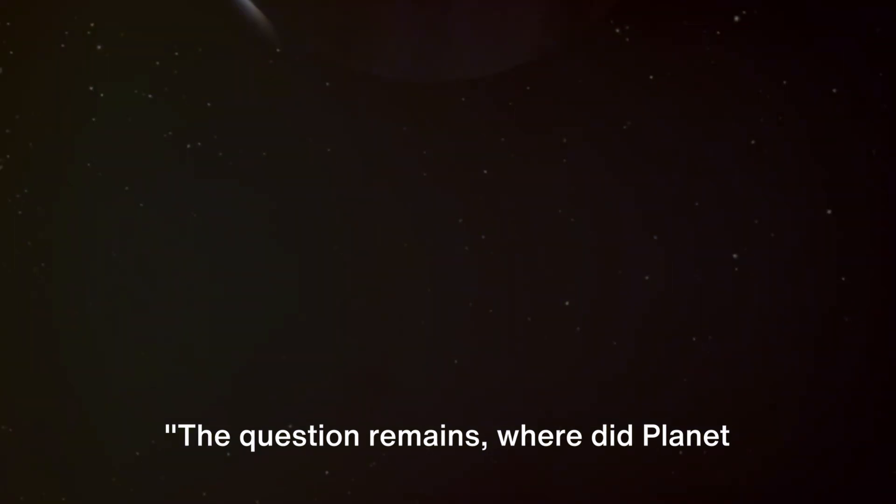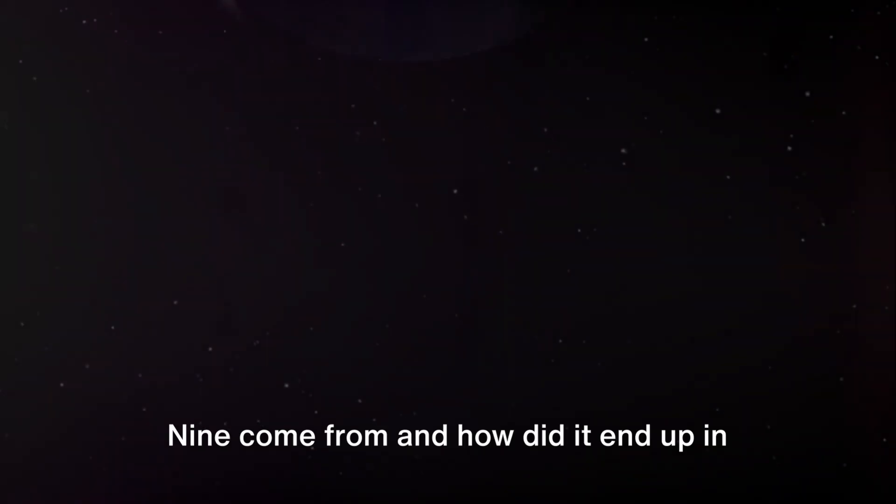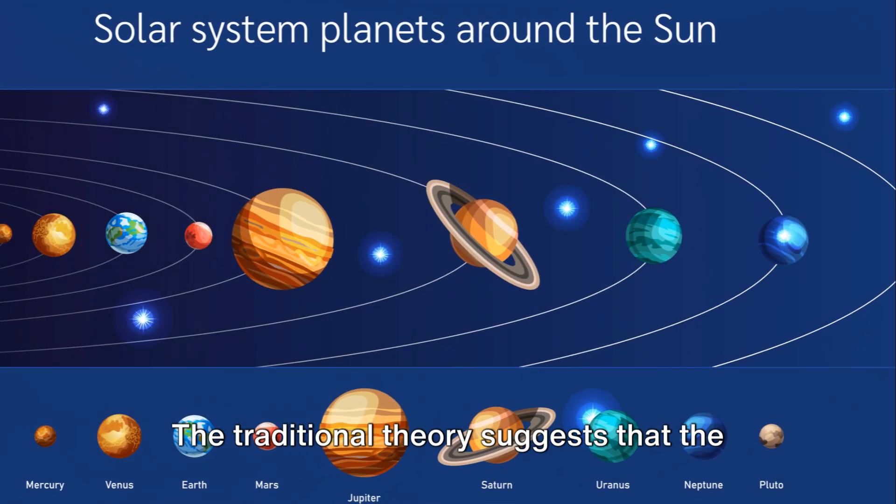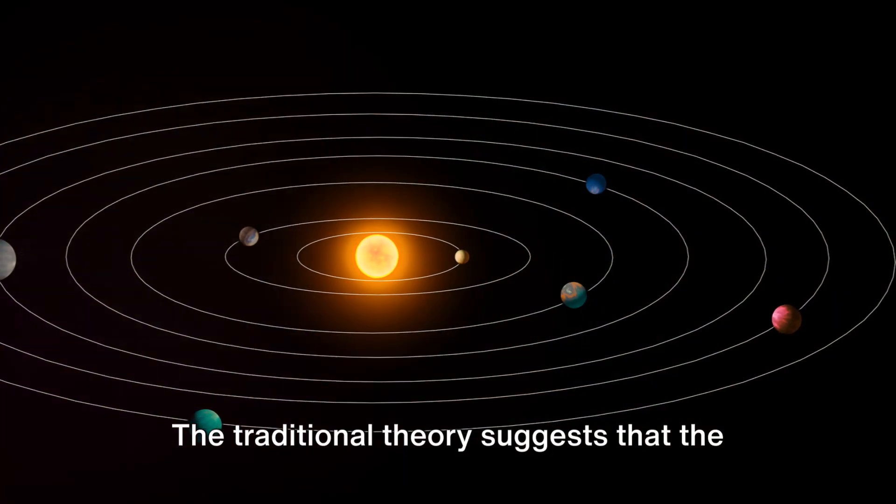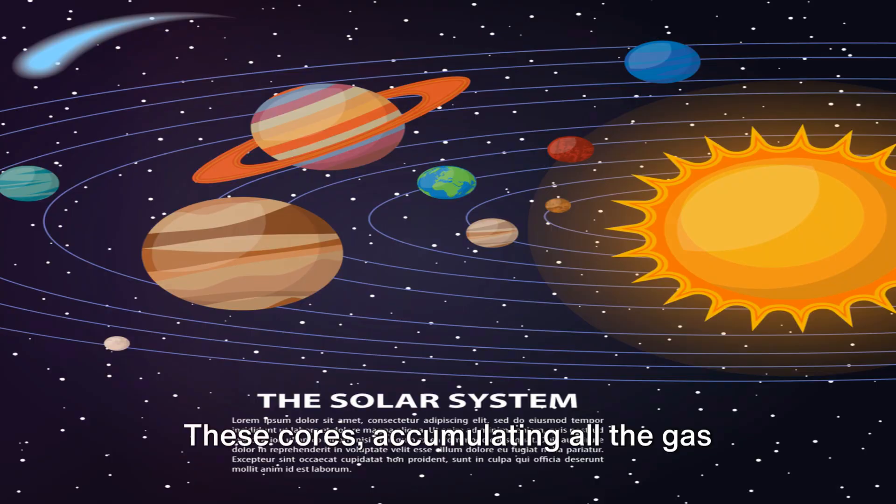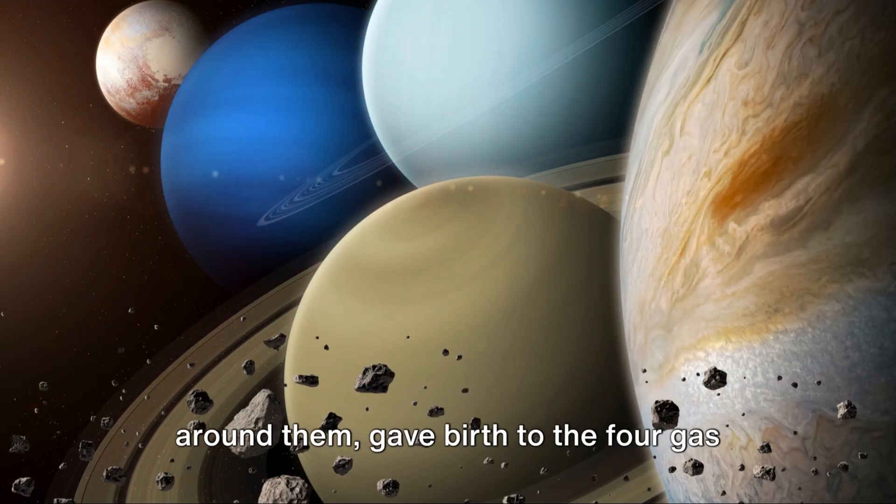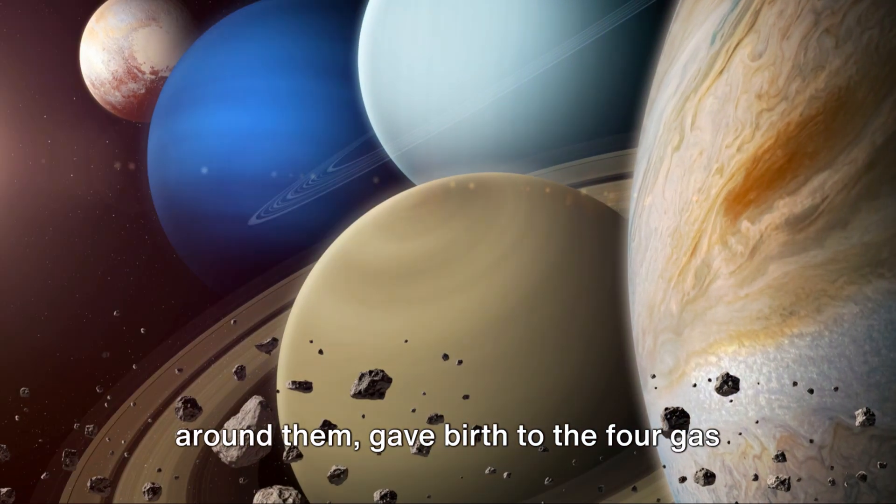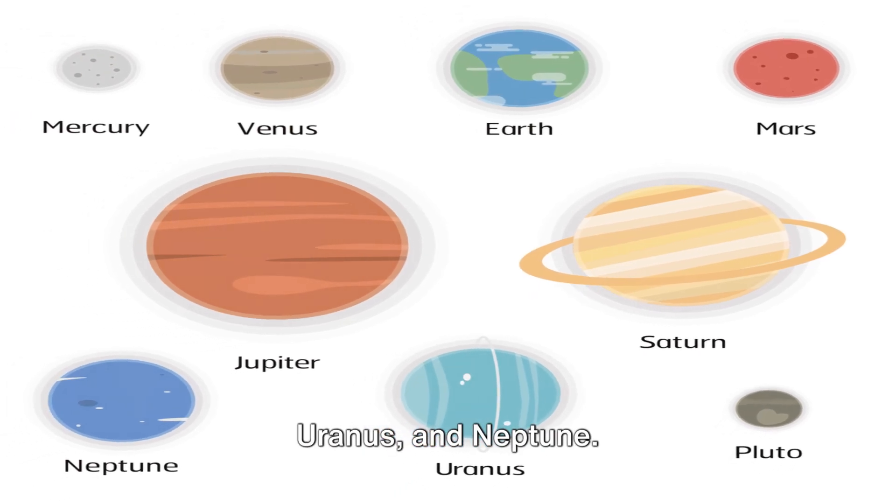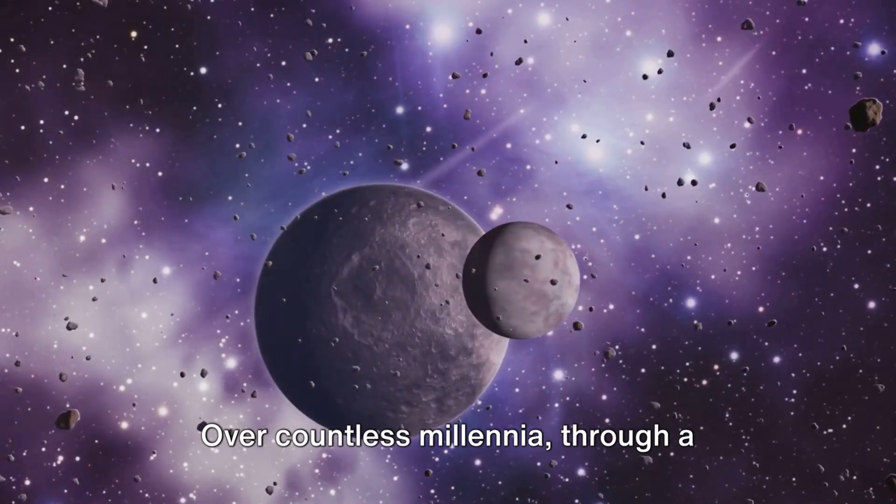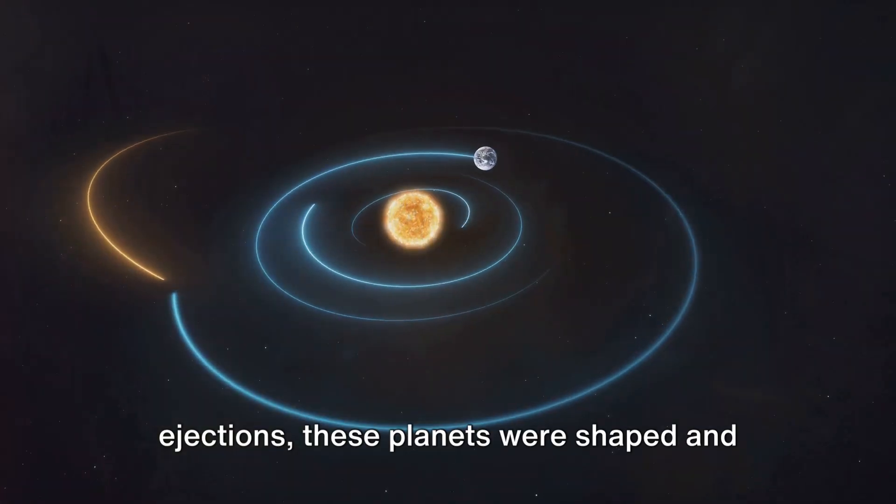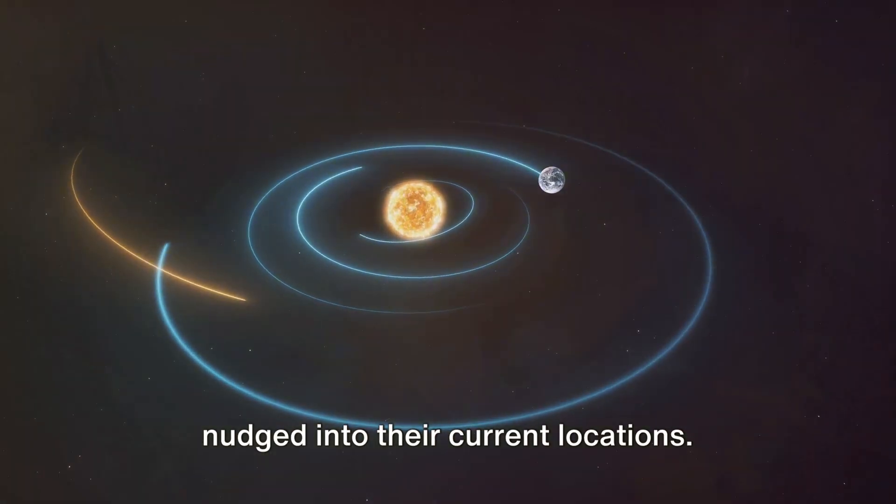The question remains: where did Planet Nine come from and how did it end up in the outer solar system? This is a query that has intrigued scientists for years. The traditional theory suggests that the early solar system began with four planetary cores. These cores, accumulating all the gas around them, gave birth to the four gas giants we know today: Jupiter, Saturn, Uranus, and Neptune. Over countless millennia, through a chaotic ballet of collisions and ejections, these planets were shaped and nudged into their current locations.